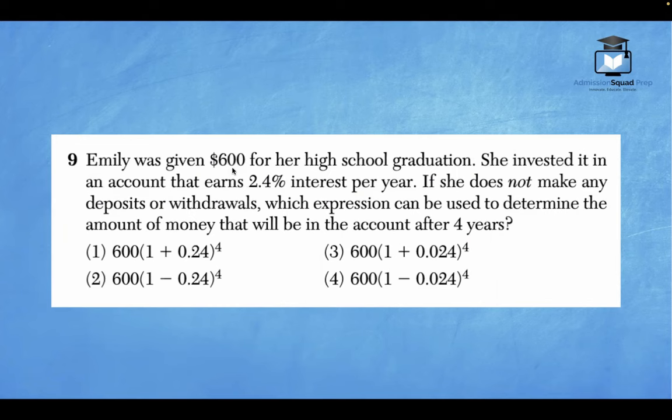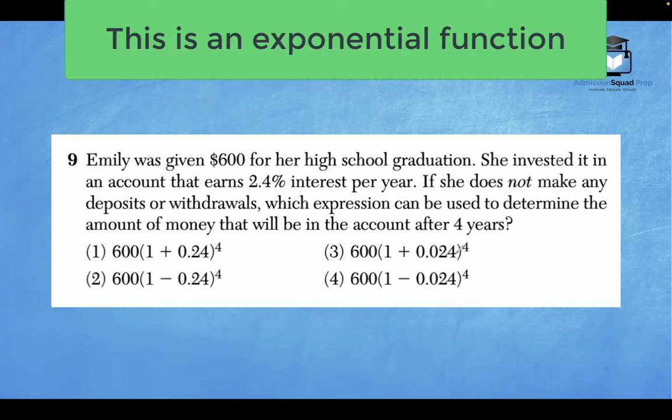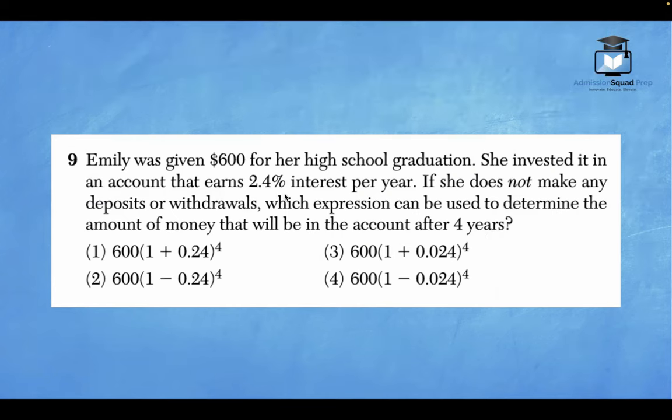This is an example of a word problem where you will apply the exponential function. Notice there's an initial value, which is 600. There's a constant rate of growth because in this problem, Emily is investing money in an account and it's earning 2.4%. So that's going to be your constant rate of growth. And then there's a time factor. The time factor is four years. So that's when this type of equation, y equals a times b to the x, is going to be extremely important.